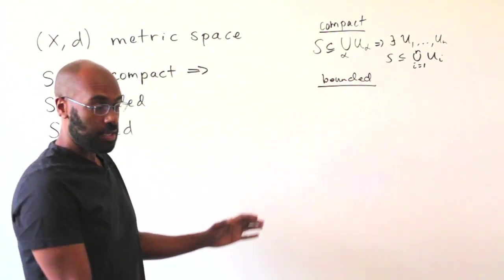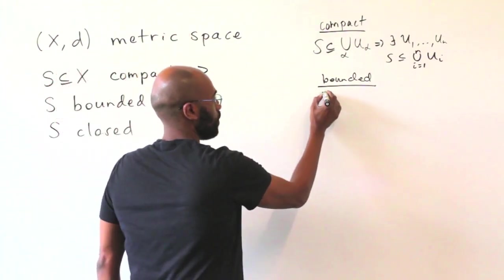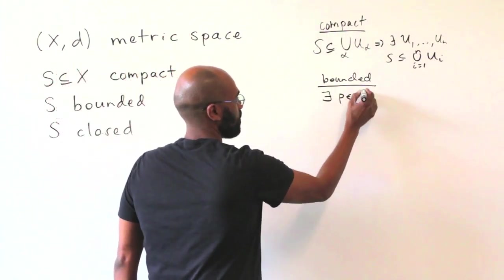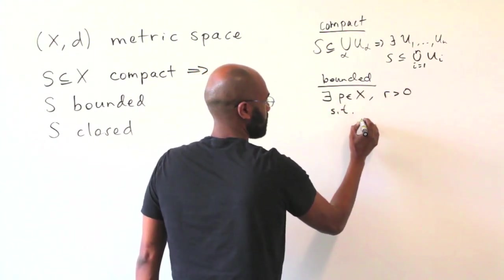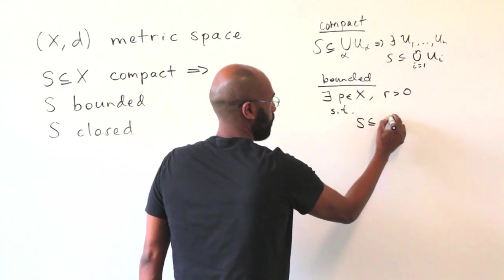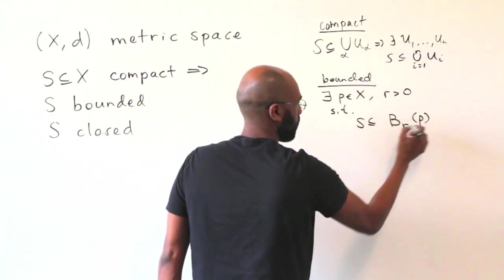Boundedness we can think about as saying you have this set and it's enclosed inside of a large enough ball. So there's a point in your metric space and a radius greater than zero so that your set sits inside of the ball of radius R centered at this point that you chose.